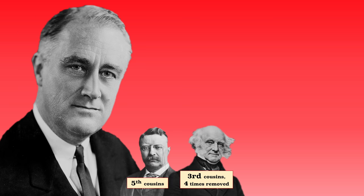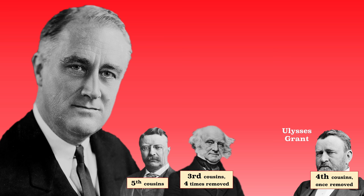So which president was the most closely related to the most other presidents? Well, if we limit it to eighth cousins or less, that'd be Franklin Roosevelt. FDR is closely related to 17 other presidents — he's related to almost 38% of all other presidents. I already mentioned the connection to Theodore Roosevelt and Van Buren, but FDR and Ulysses Grant, the 18th president, are fourth cousins once removed.